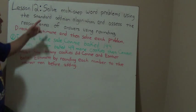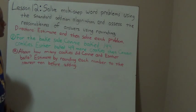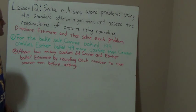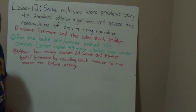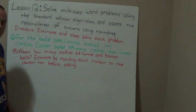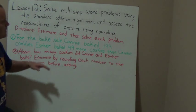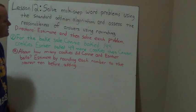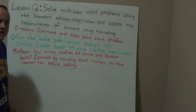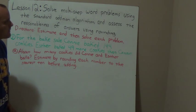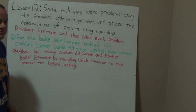Today's lesson is lesson 12: solve multi-step word problems using the standard addition algorithm and assess the reasonableness of answers using rounding. What we're going to do today is take a look at some word problems and actually break them down. There's going to be more than one step to these word problems. We're going to use our addition algorithm like we learned yesterday to solve our answers, and then we're also going to assess the reasonableness using rounding.